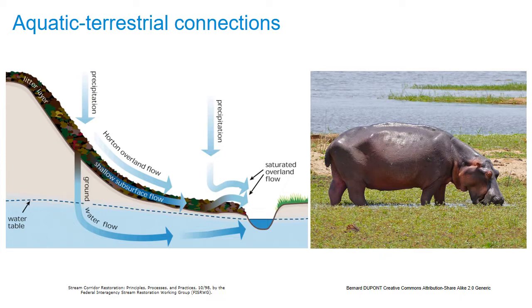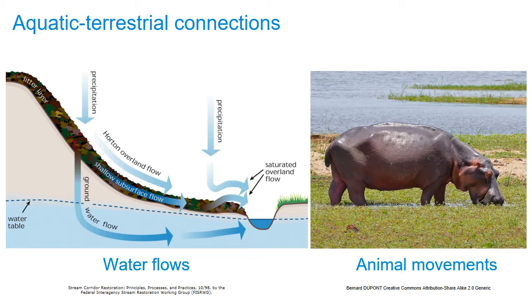Freshwater ecosystems are also connected to the terrestrial ecosystems adjoining them by flowing water and animal movements. Water runoff from the landscape replenishes the quantity of water in freshwater ecosystems and washes in needed organic matter, nutrients, and sediment. Animals moving from terrestrial to freshwater ecosystems also transport energy and nutrients. For example, hippos consume terrestrial grasses and deposit partially digested organic matter into freshwater ecosystems in their feces. Many other animals move between freshwater and terrestrial ecosystems, and the transport of material occurs in both directions.